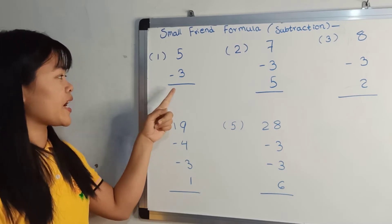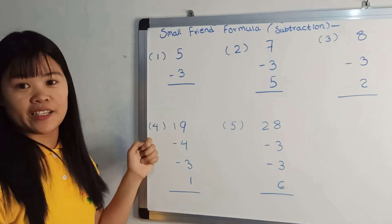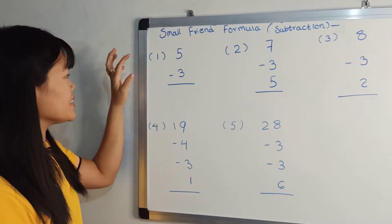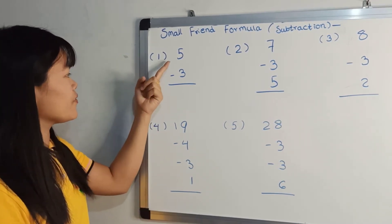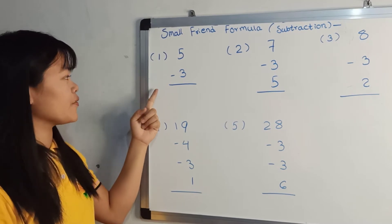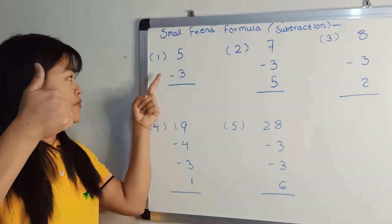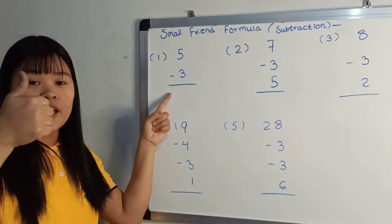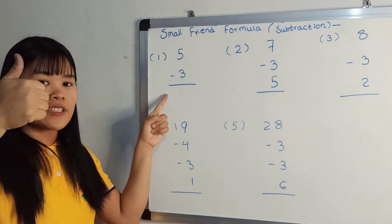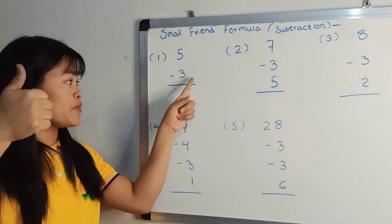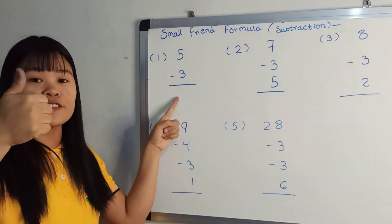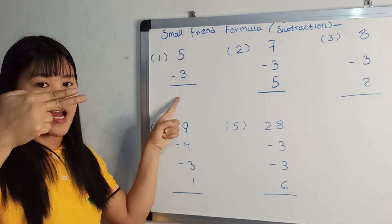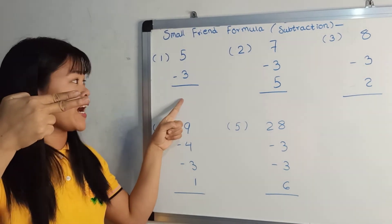Now, we have 3 noodles. We have 5 minus 3. We have 3 noodles. 3 noodles are 2.